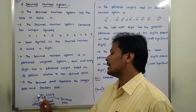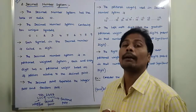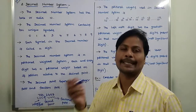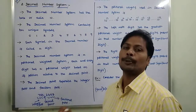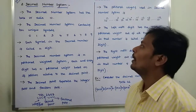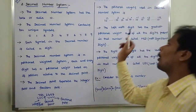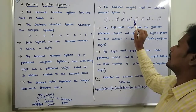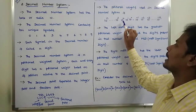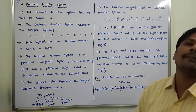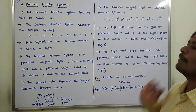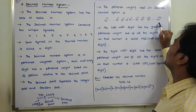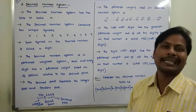Each decimal digit is multiplied with the corresponding positional weight based on its position relative to the decimal point. Before the decimal point, the positional weight starts from right to left: 10 power 0, 10 power 1, 10 power 2, 10 power 3, up to 10 power n. After the decimal point, the positional weight starts from 10 power minus 1 to 10 power minus k.